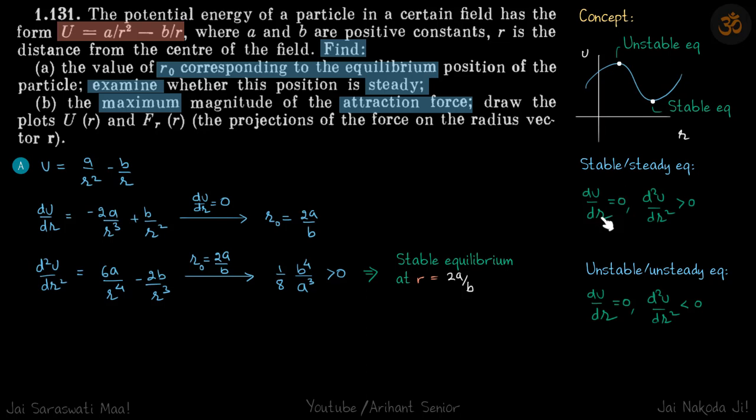Mathematically, at stable or steady equilibrium, dU by dR is zero and d²U by dR² is greater than zero. For unstable equilibrium, dU by dR is again zero, but d²U by dR² is less than zero.